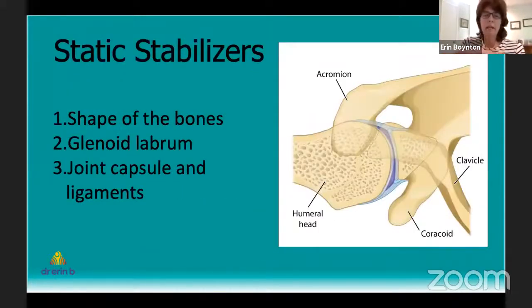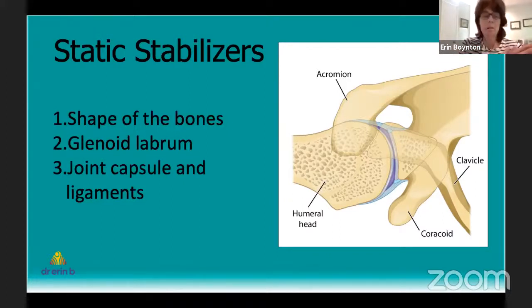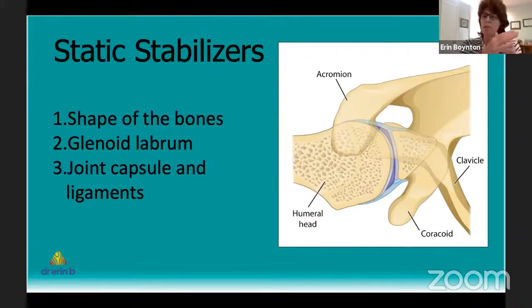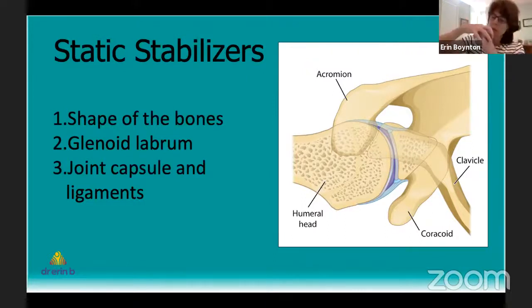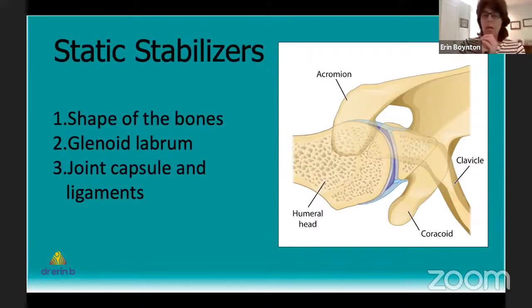When I think about stability of any joint, I look at static stabilizers — things that don't move, fixed in position — and that would be the shape of the bones. In the shoulder, the static stabilizers actually aren't great at stabilizing the joint at all. They're designed to allow great freedom of movement. When you compare that to the hip joint, which is a ball and socket, the hip is more constrained so that it doesn't dislocate easily. But we also can't put our ankle up over our shoulder.